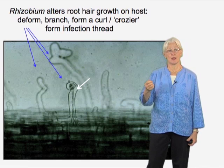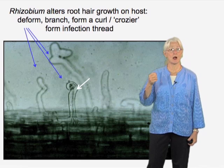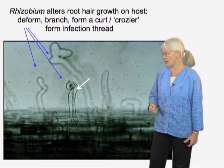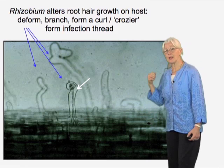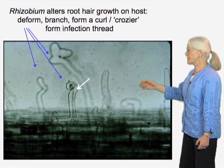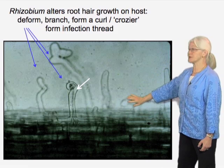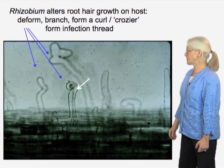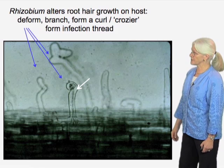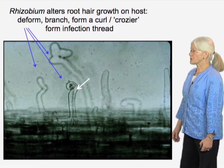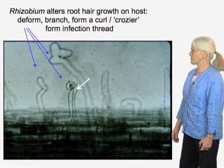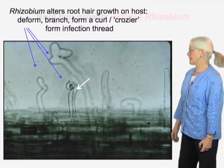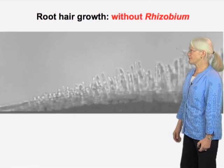The bacteria are then able to travel by proliferating and burrowing their way into the plant cell itself. This white arrow shows an infection thread — formed by the plant in response to the bacteria. Within the infection thread, bacteria are proliferating and invading through the root hair cell and eventually down into further cell layers.